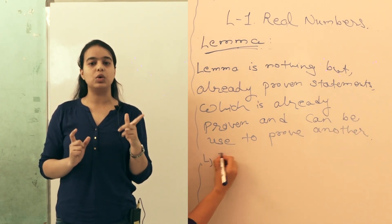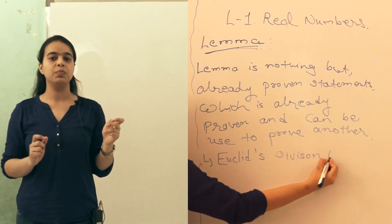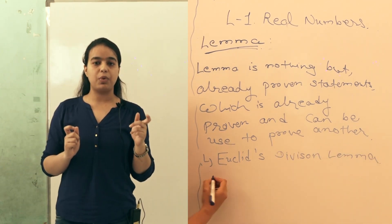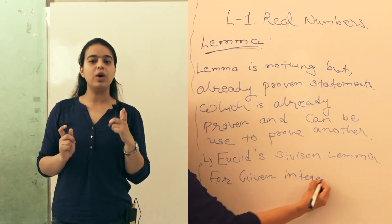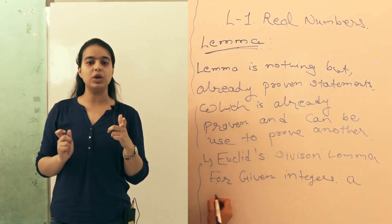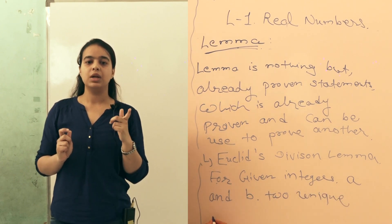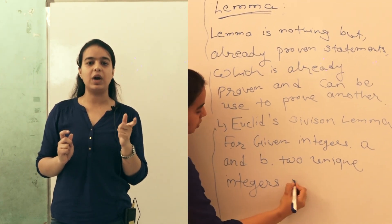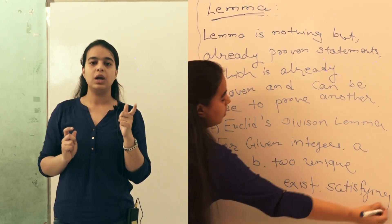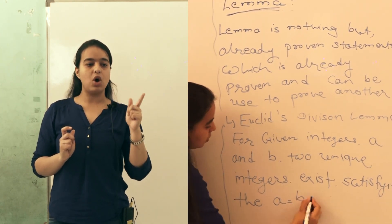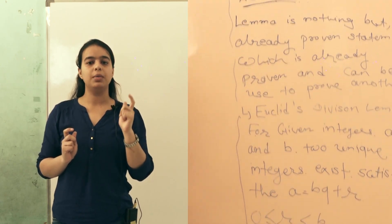If we write Euclid's Division Lemma as a formal statement: for given positive integers a and b, there exist two integers q and r satisfying the equation a is equal to b multiplied by q plus r, where r is always greater than or equal to 0 but less than b.